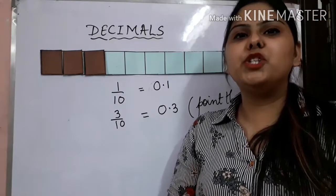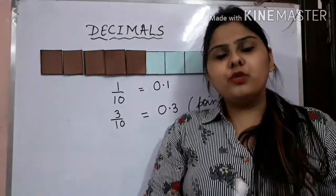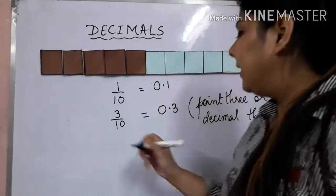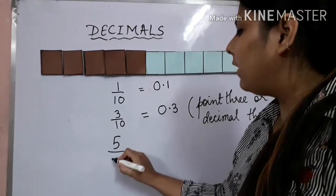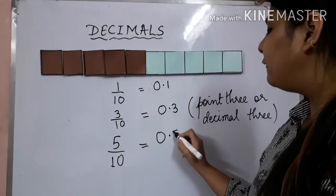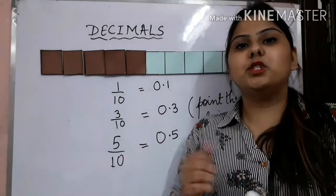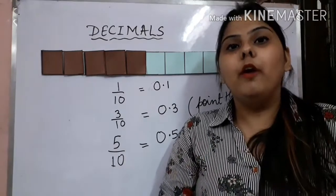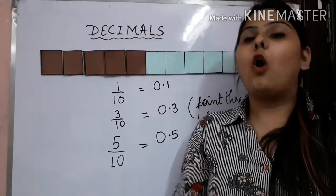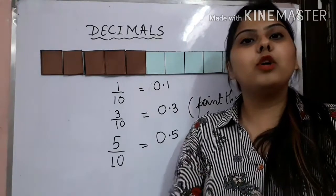Moving further, let us shade 5 parts out of the 10 parts. In order to write down the fraction of the shaded portion, it comes out to be 5 upon 10, which is equal to 0.5. This situation can also apply when the number of boxes is equal to 100, 1000, 10,000 or so on.